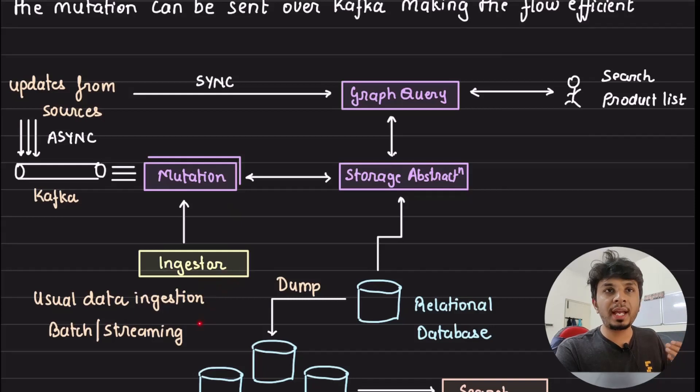Now you would have a normal ingestion flow where through the mutation, a batch or a streaming ingestion job would be run whose job would be to take in regular updates that are happening from different sources through mutation, parse it, and update it in your relational database, right?